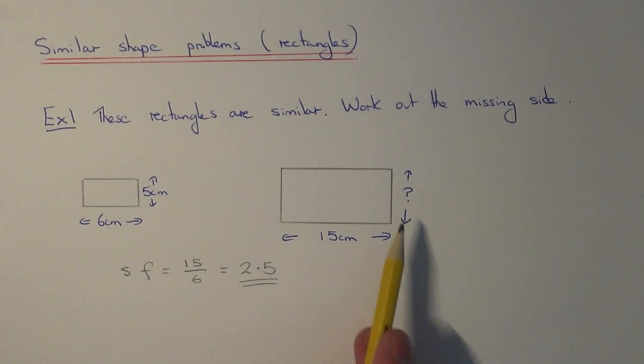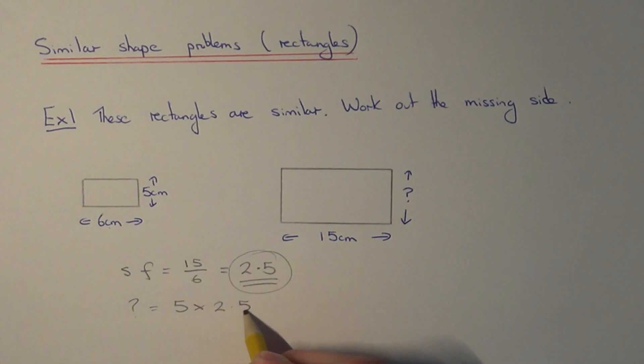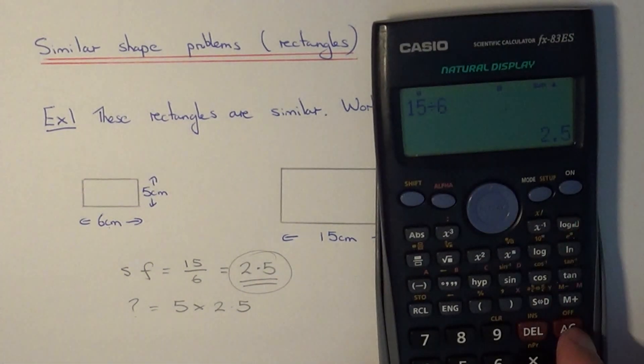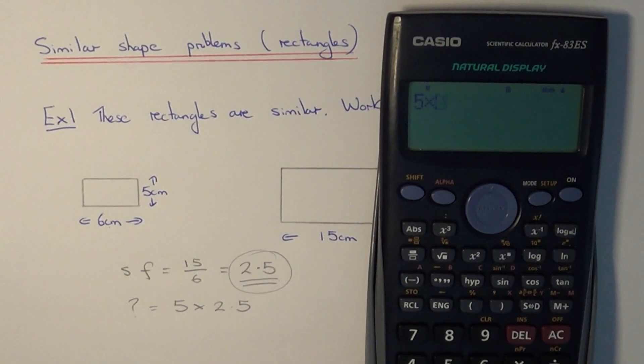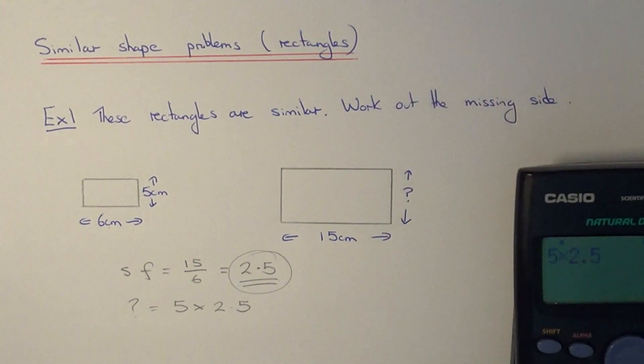So to find the width of our larger rectangle, we now just need to multiply the 5 by 2.5. Again, if you can't do that in your head, just use your calculator. And that gives an answer of 12.5.